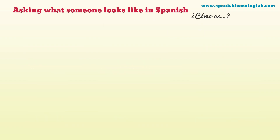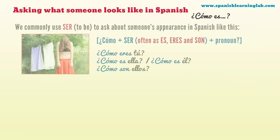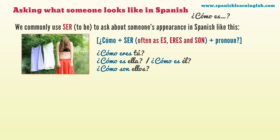Asking what someone looks like in Spanish — ¿Cómo es? We commonly use ser to ask about someone's appearance in Spanish. The structure is: cómo plus ser, often conjugated as es, eres, and son, plus a pronoun. Be careful to use the right conjugation for ser depending on who you are referring to.